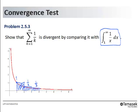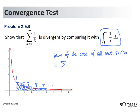Continuing in a similar manner, we see the area of the fourth rectangular strip is one quarter, and so on. From this, we conclude that the sum of the areas of all such rectangular strips equals the infinite summation of 1 over k, which we know as the harmonic series.